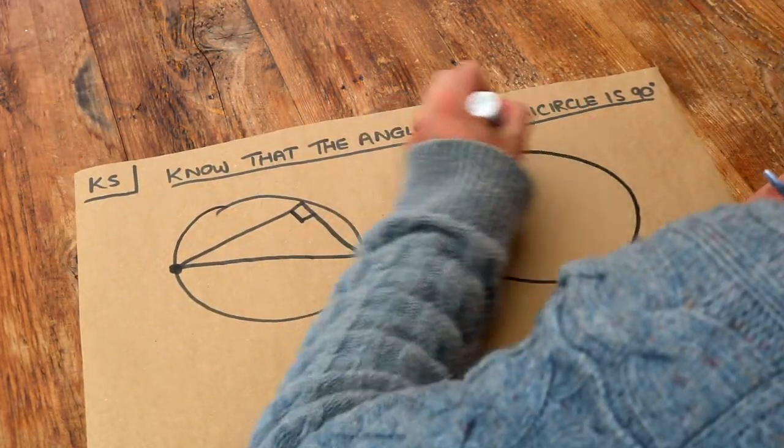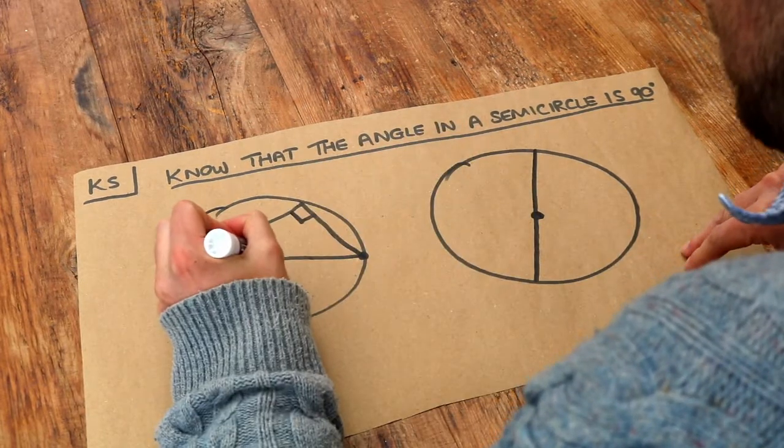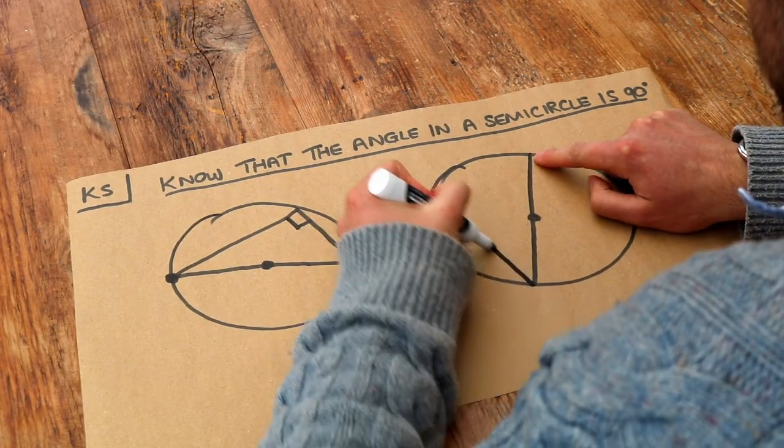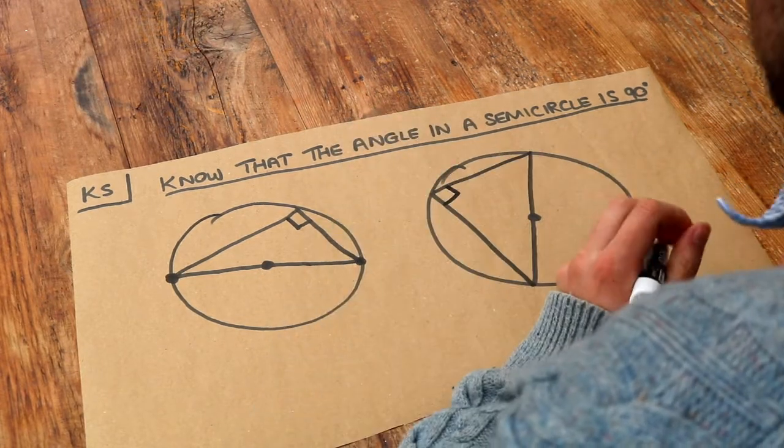So if I can draw another semicircle, if I split it in half so that it goes through the center, this goes through the center, then if we fire from the two ends of this diameter onto the circumference, then that angle will be a right angle.